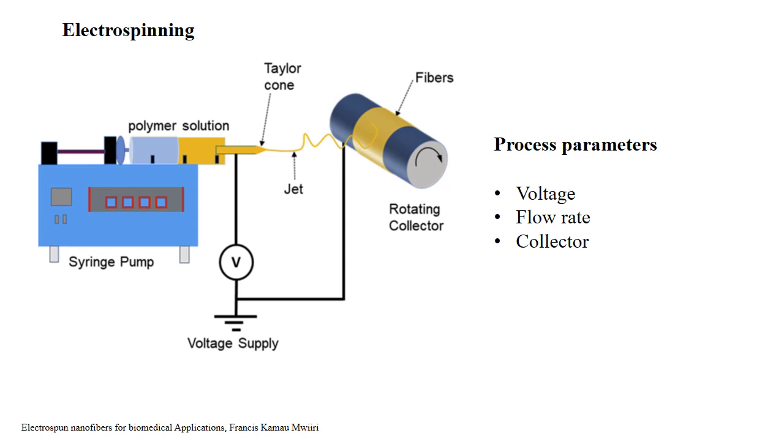Next is the distance between the tip and the collector. So normally this is one of the important parameter because when the spinning distance decreases to a critical length and there is a formation of beaded nanofiber that is due to the insufficient fiber stretching and solvent evaporation. If we increase the spinning distance which will provide a large space for jet stretching and longer time for solvent evaporation. So as a result we will get a uniform nanofibers.